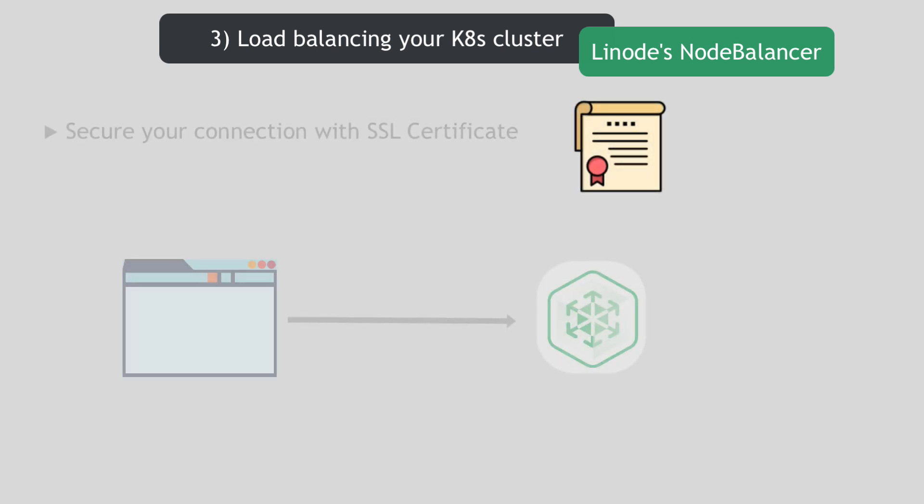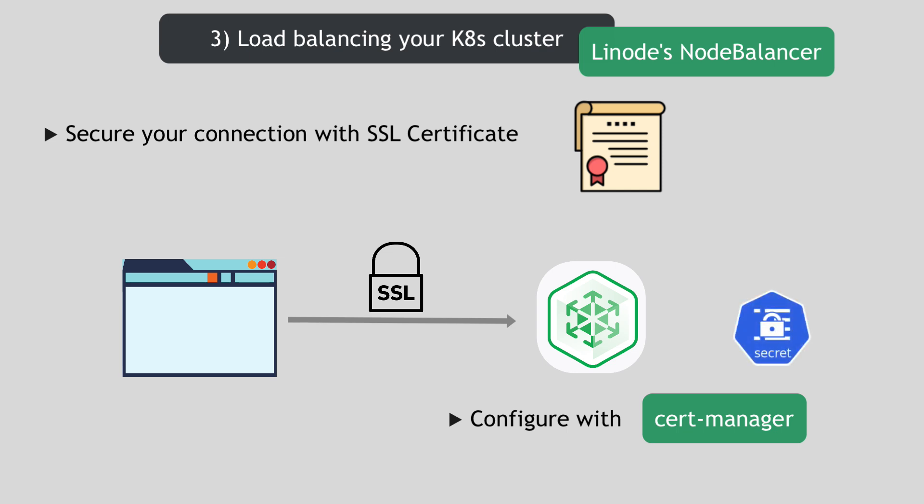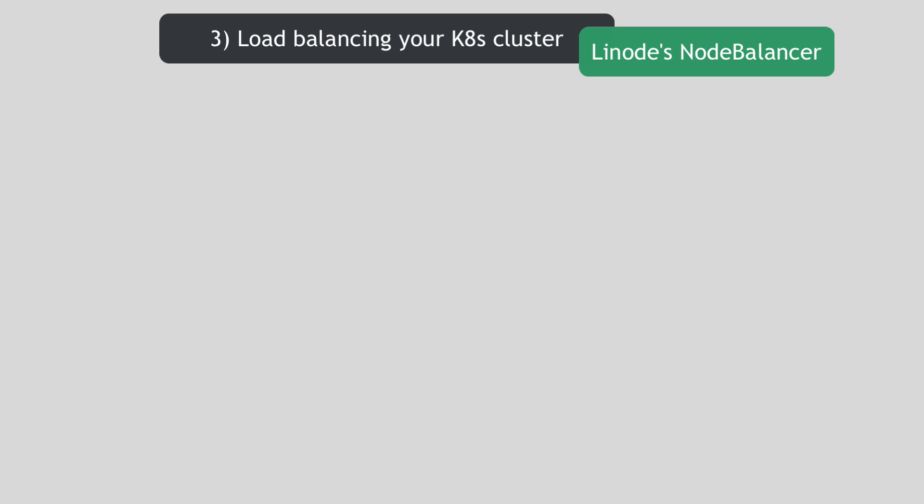You need your connections to be secured, so you can also configure the NodeBalancer with an SSL certificate pretty easily to accept HTTPS requests. On Linode, you can do that using a plugin called cert-manager, which basically helps with managing SSL/TLS certificates. You can get the certificate and store it as a Kubernetes secret and use it to secure the connection to your cluster. I will make a demo video right after this where I will show you all of this in practice.